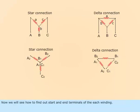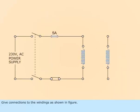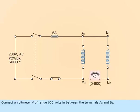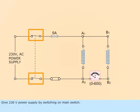Now we will see how to find out the start and end terminals of each winding. Give connections to the windings as shown in figure. Short terminals A1 and B1. Connect a voltmeter V of range 600 volts between terminals A2 and B2. Give 230 volts power supply by switching on the main switch.